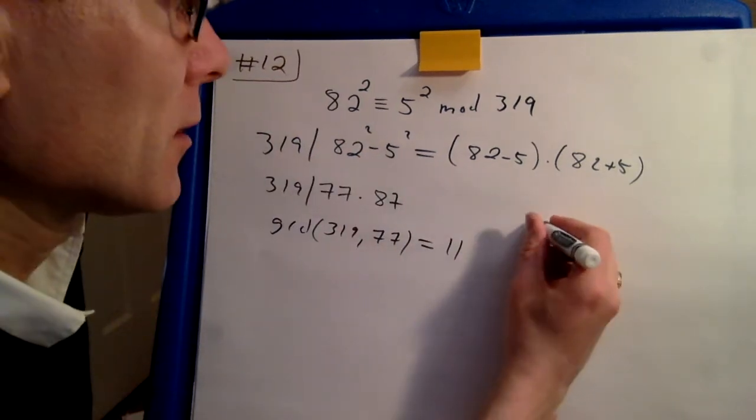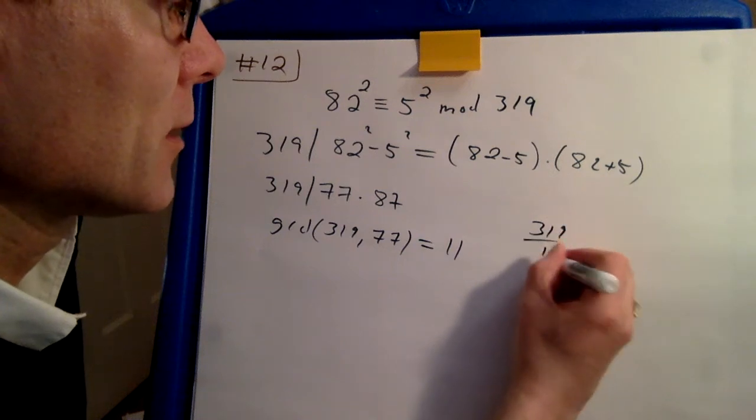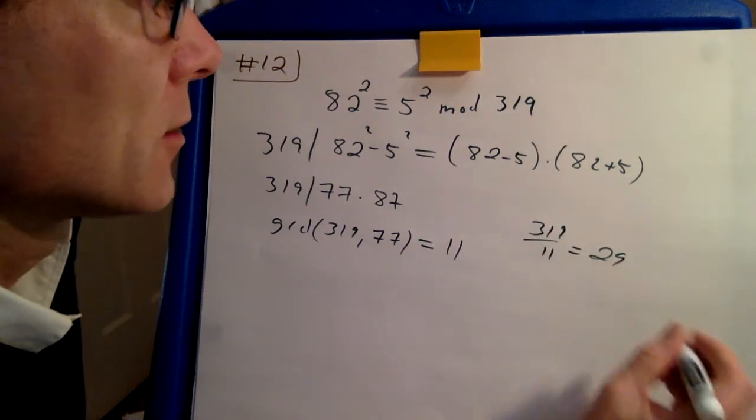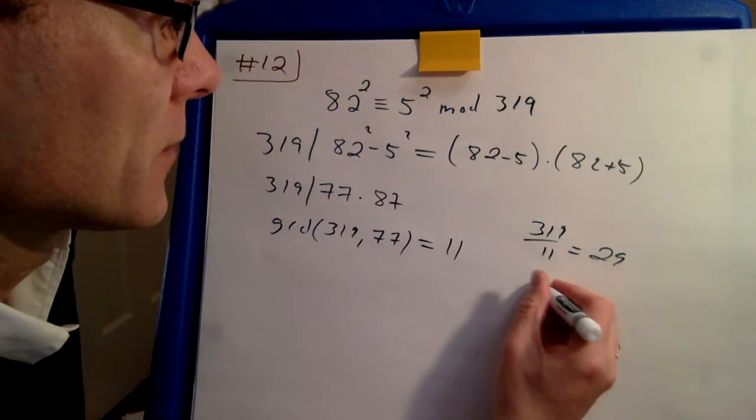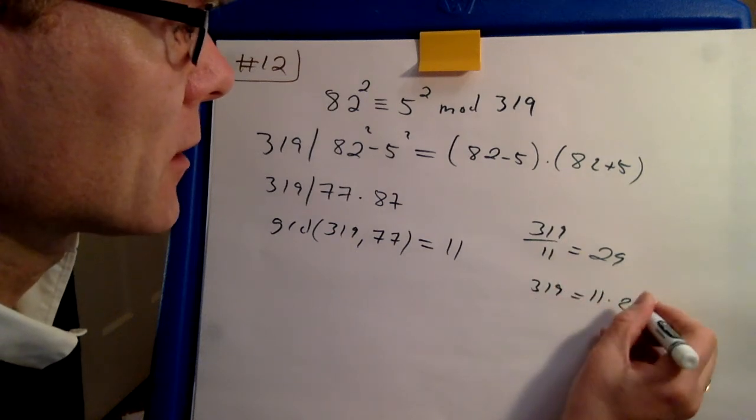Hence you can compute the other one: 319 divided by 11 is 29. So you know that 319 factors as 11 times 29.